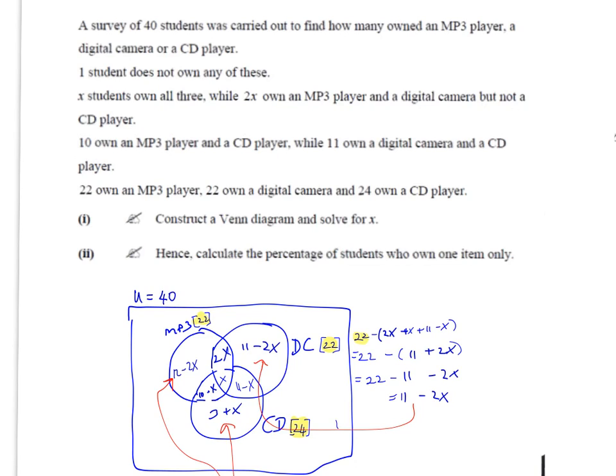In this part they don't say but not a digital camera, or they don't say 10 own an MP3 player and a CD player only. If they had said that, then we'd just put the 10 in here. But because the 10 belongs to the total intersection of the two sets, we have to minus the x that we've already put in here. Generally speaking, if you don't see a but not or only at the end of these clauses, that means you have to minus whatever is in the middle from the number.